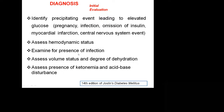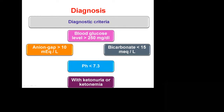Assess the volume status — if the patient is in dehydration, first correct that dehydration. We don't want to correct the sugar very rapidly; the main problem is dehydration. The diagnostic criteria are: blood sugar more than 250, metabolic acidosis with anion gap more than 10, bicarbonate less than 15, pH less than 7.3, and presence of ketones in blood and urine.